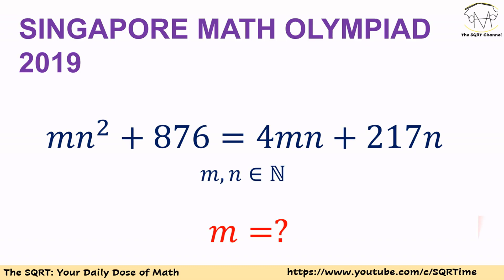Hello everyone. In this video we are going to talk about another problem from Singapore Math Olympiad 2019. In this problem we have mn² + 876 = 4mn + 217n. We know m and n are natural numbers and we want to find m.